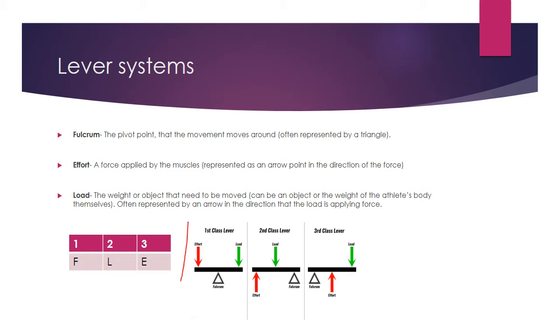So first of all, we've got an example of a first class lever. If we draw this diagram on the left, we can see one, two, three at the top and then FLE underneath. So what this basically means is that if we want a first class lever, our fulcrum is in the middle. If we're looking at a second class lever, our load is in the middle. And if we're looking at a third class lever, our effort is in the middle.